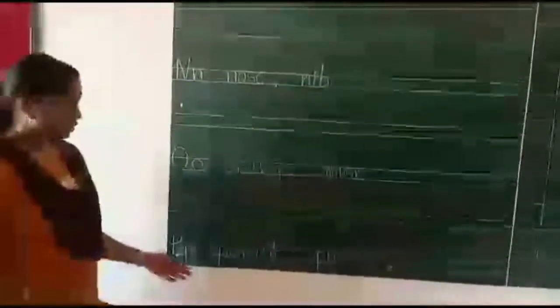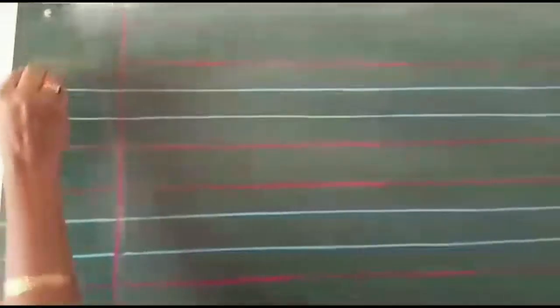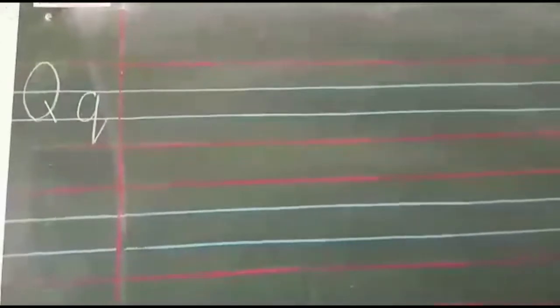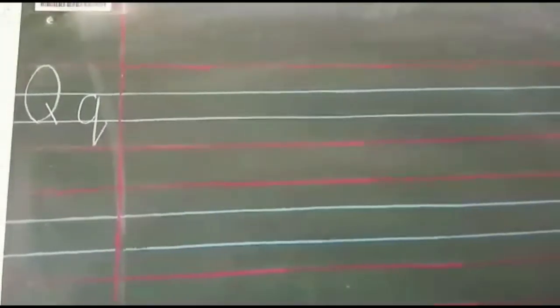Okay, so here I can't fit, so I will write it on the first line, and you have to continue after this. Leave a line, then write Q. Capital letter Q, script letter Q. Q for queen, Q for quilt, Q for question mark.